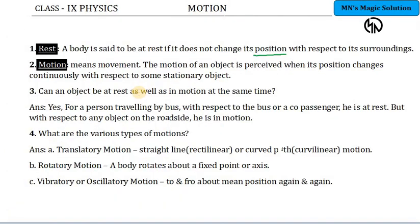Here we discuss a few definitions relevant to rest and motion. Rest: A body is said to be at rest if it does not change its position with respect to its surroundings. If it does not change, then it is said to be at rest. If the position with respect to the surroundings or with some other stationary object changes, then the object is said to be in motion.